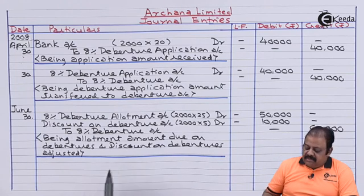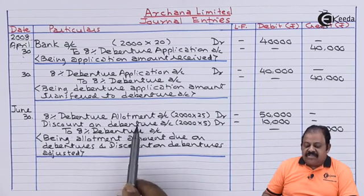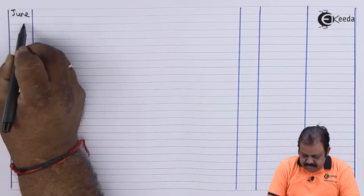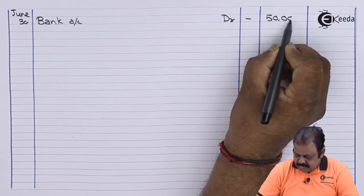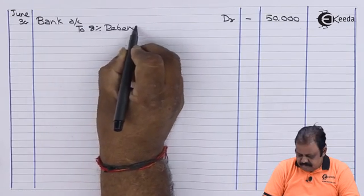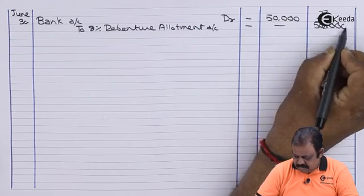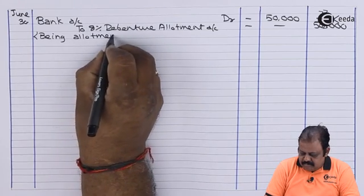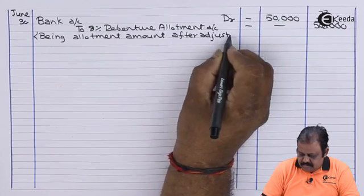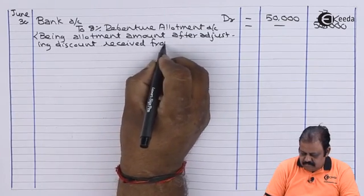Next entry will be for receiving this allotment amount of Rs. 50,000. Bank account debit Rs. 50,000 to 8% debenture allotment account Rs. 50,000, being allotment amount after adjusting discount received from debenture holders. Here we have completed the allotment stage.